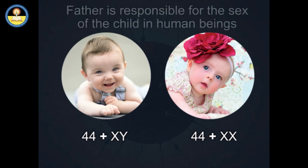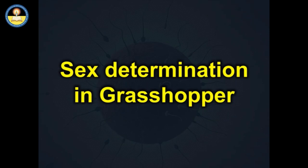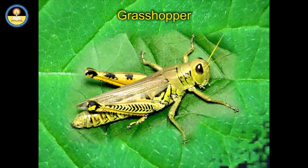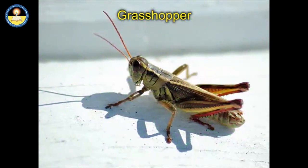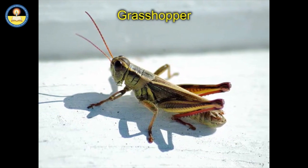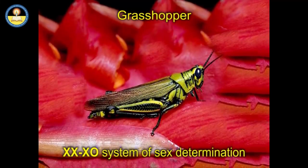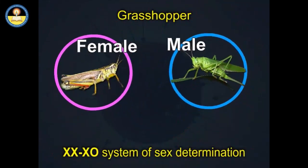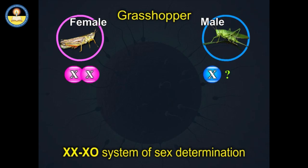We can say that the father is responsible for the sex of the child in human beings. Sex Determination in Grasshopper: The mechanism of sex determination in grasshoppers is one of the simplest mechanisms of chromosomal sex determination and is called the XO system. In this system, females have two X chromosomes and males possess a single X chromosome. There is no other sex chromosome.